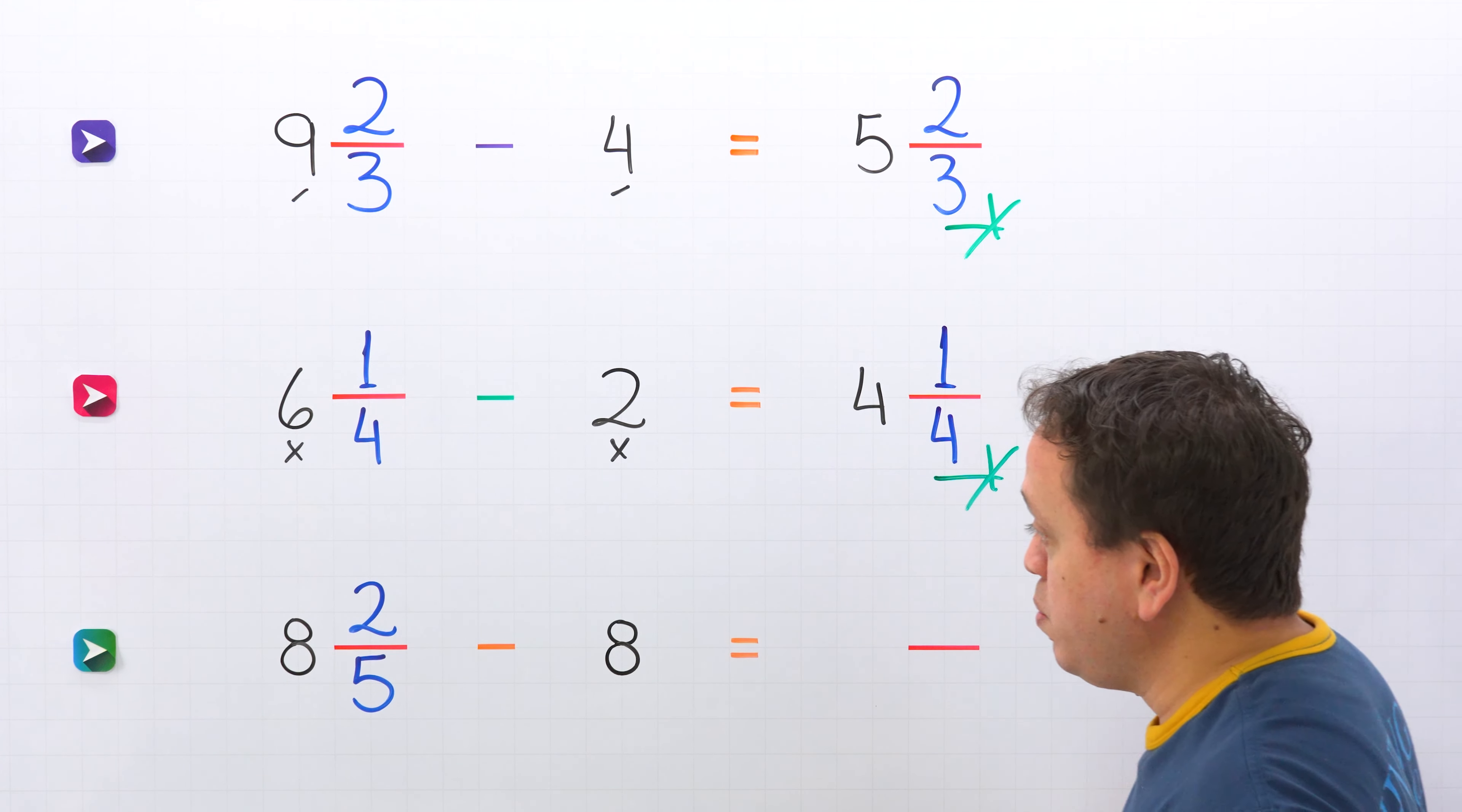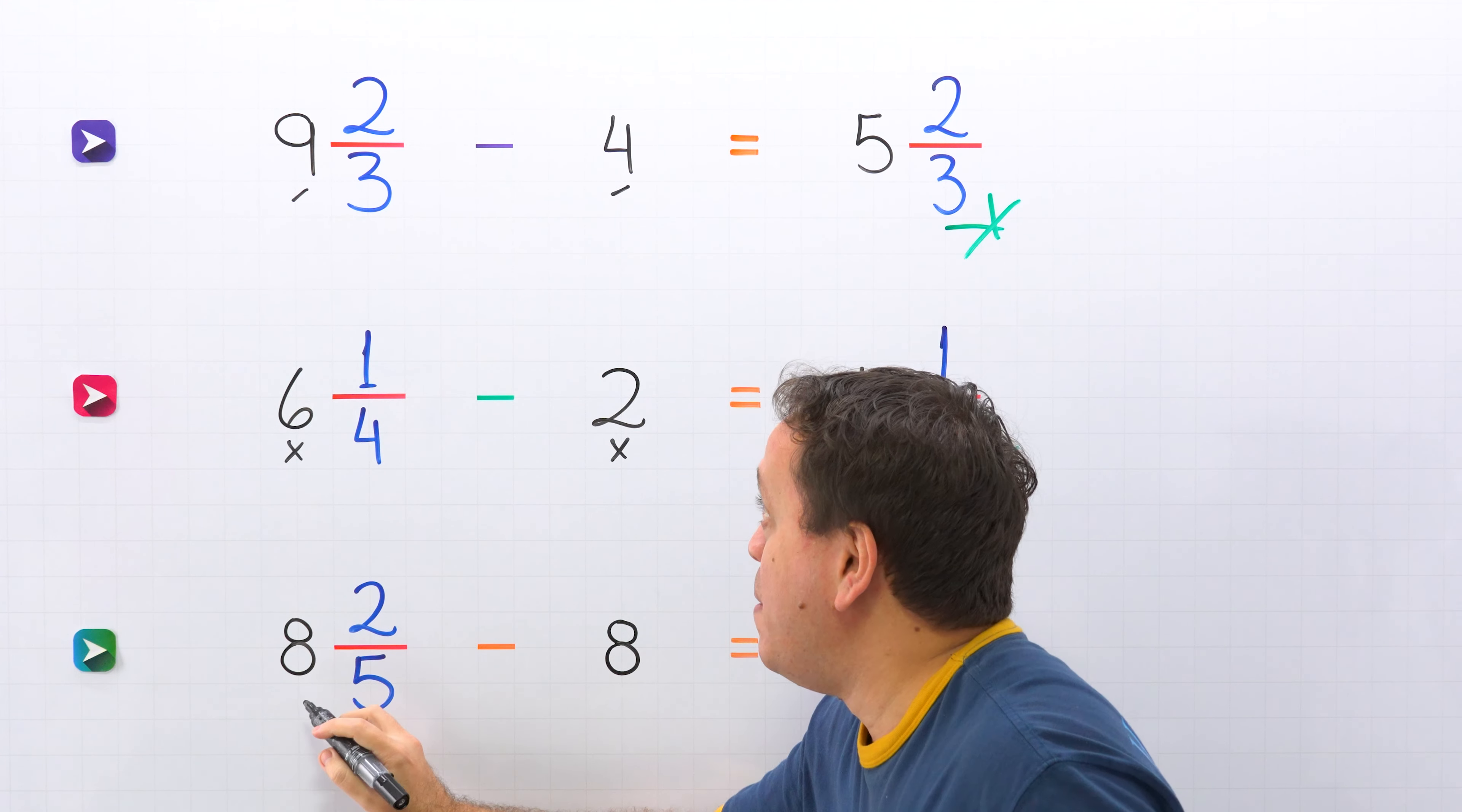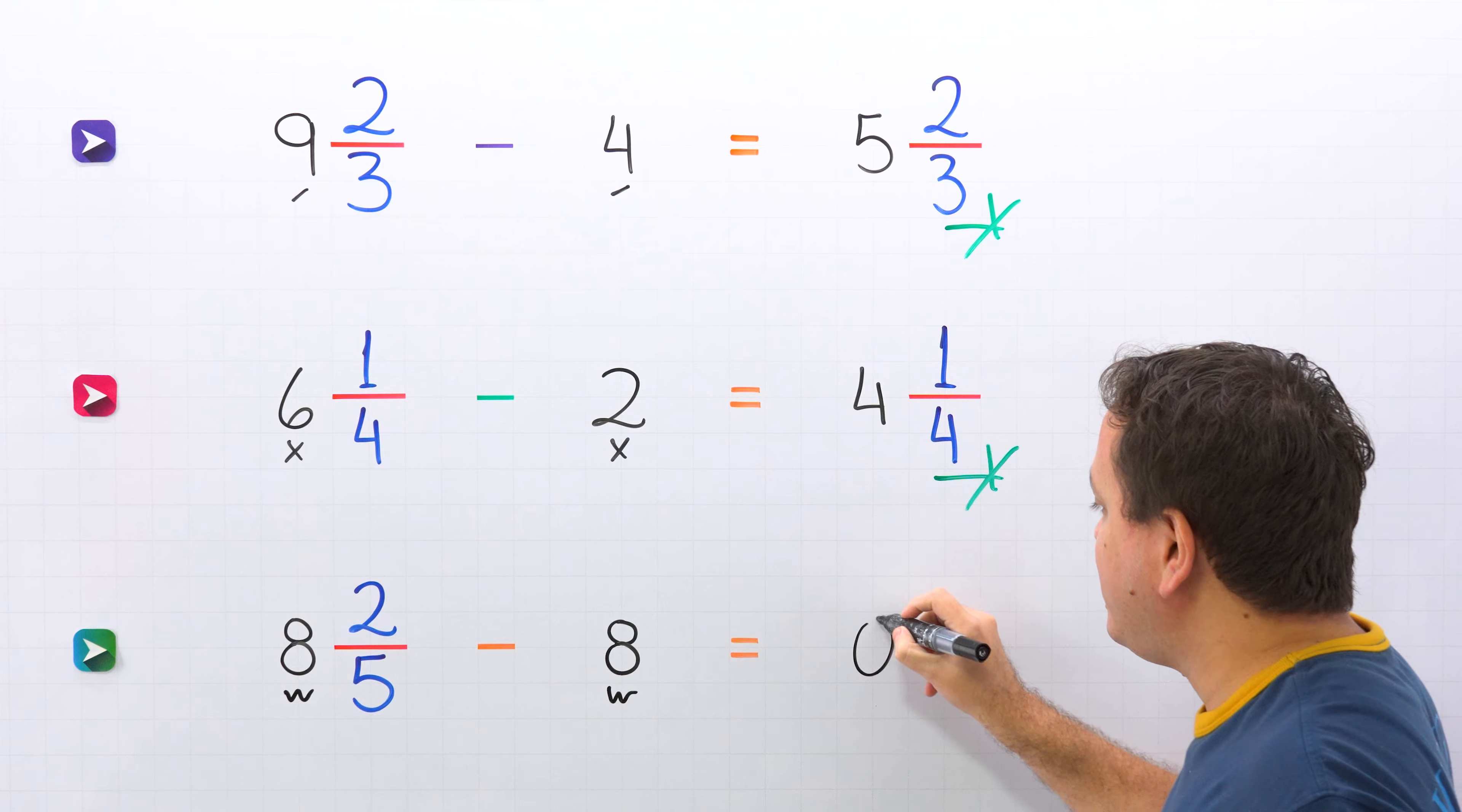In the last example we need to subtract eight and two fifths minus eight. You already know the steps. We start by subtracting the whole numbers. And the whole numbers are eight and eight over here. Eight minus eight gives us zero.